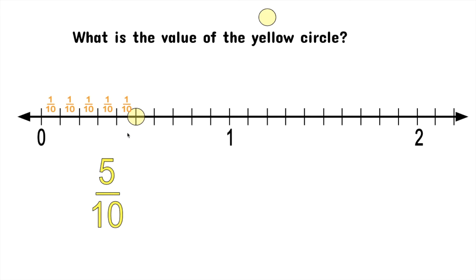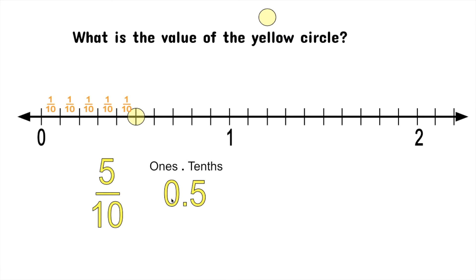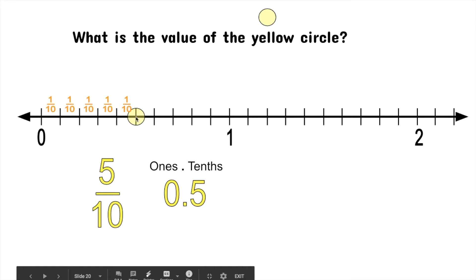If we wanted to write that as a decimal, it's easy. Let's just picture a place value chart. Five tenths — I have five in the tenths place. So that's exactly what we're writing: five in the tenths place. I don't have any ones — we'd have to make it all the way to this number before I have any ones. So five tenths is right here on the number line.